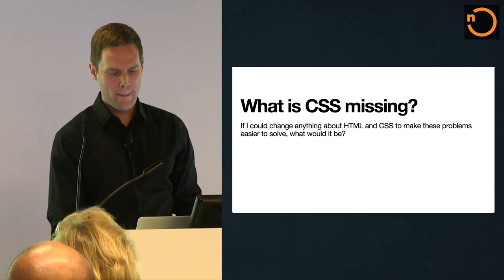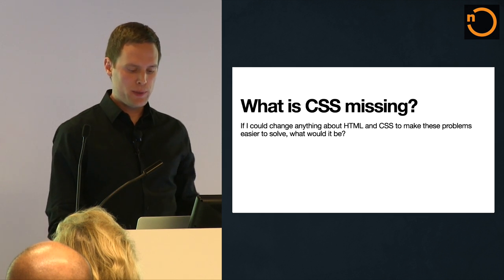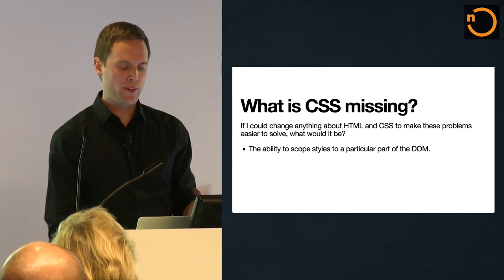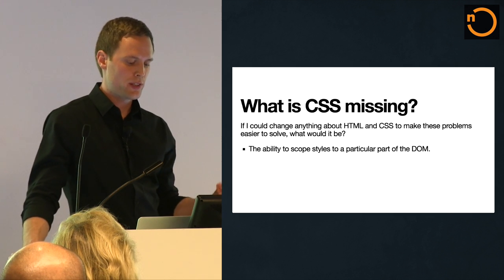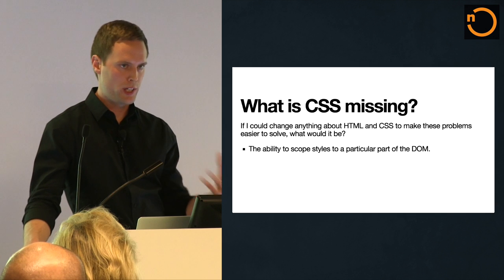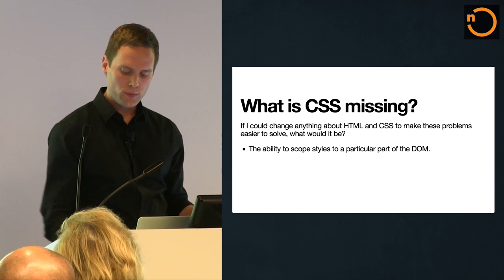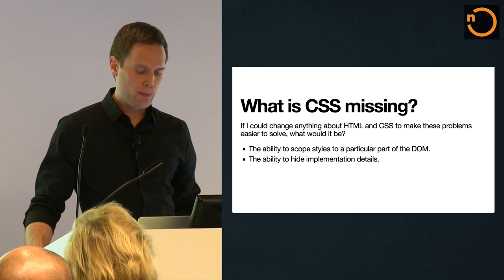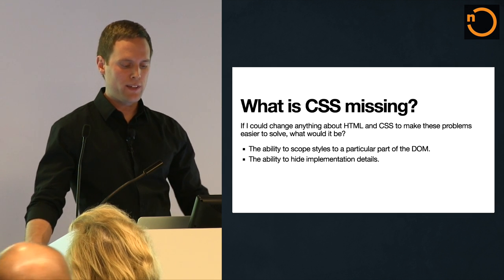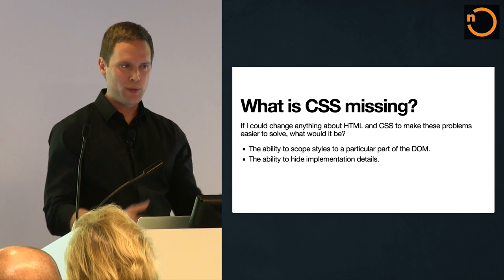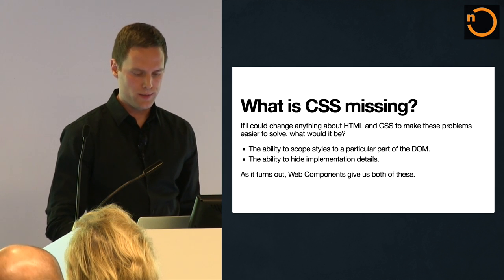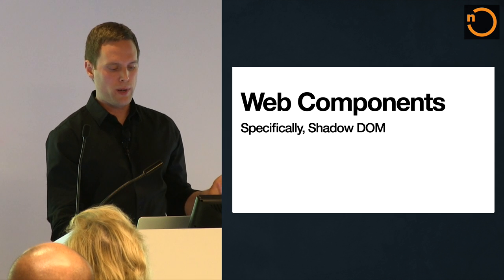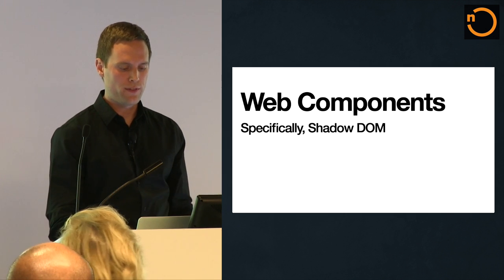So what is missing in CSS? The first thing that's desperately missing is the ability to scope styles to a particular section of the DOM or to a particular component — because right now in CSS, everything is global. A second thing that's missing, as I showed with the Bootstrap example, is the ability to hide implementation details. It would be great if you could wrap this up into a little package and give it to somebody. And as it turns out, Web Components give us both of these things.